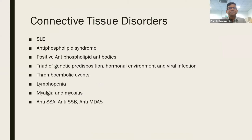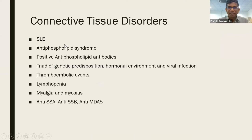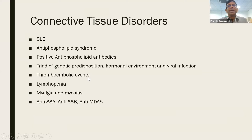The whole list of connective tissue disorders has been described in COVID-19. Has SLE been reported? Yes. Antiphospholipid syndrome? Yes — positive antiphospholipid antibodies are seen, though patients may not develop thromboembolism, stroke, DVT or pulmonary embolism; they just have positive antibodies. The triad of genetic predisposition, hormonal factors, and viral infection is very well described in connective tissue disorders. Thromboembolism, lymphopenia, myalgia, and myositis are seen, along with anti-SSA, anti-SSB, and anti-MDA5 antibodies, which are specific for myositis.